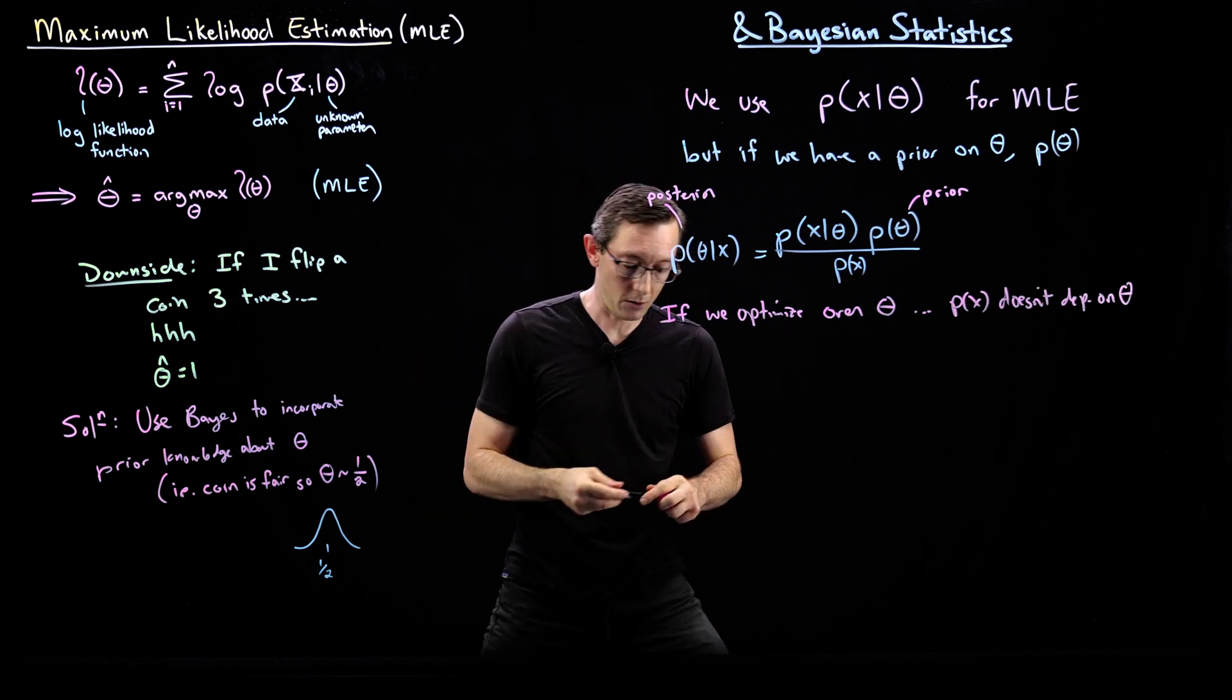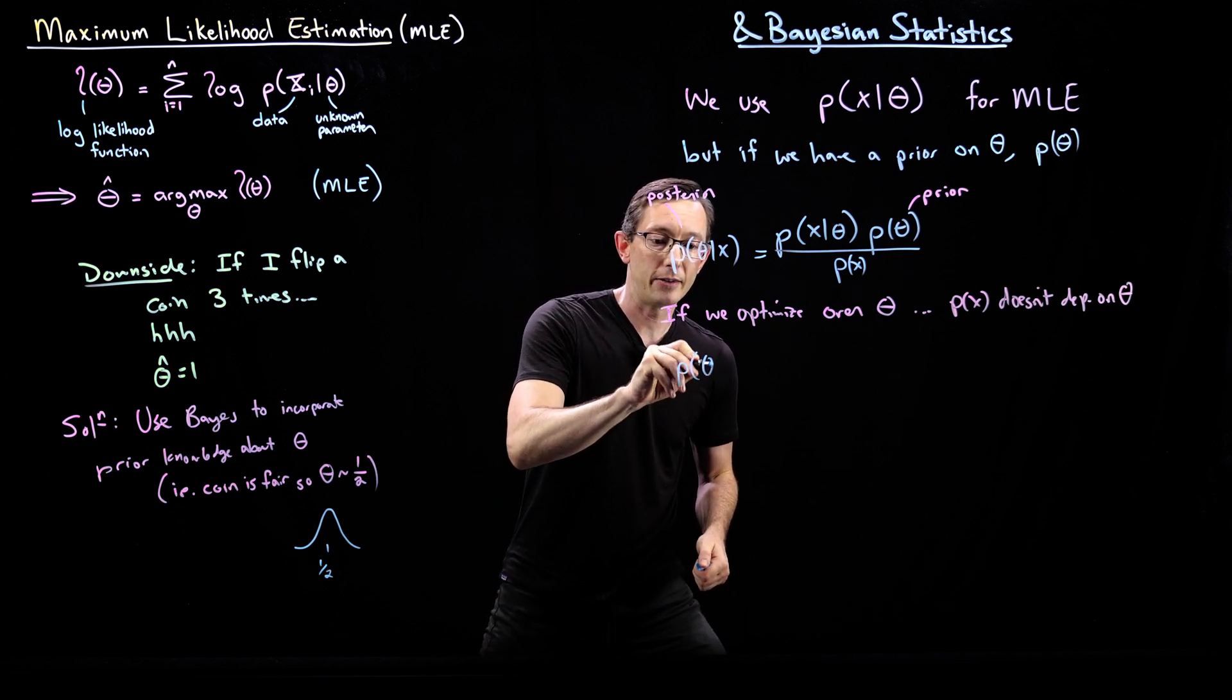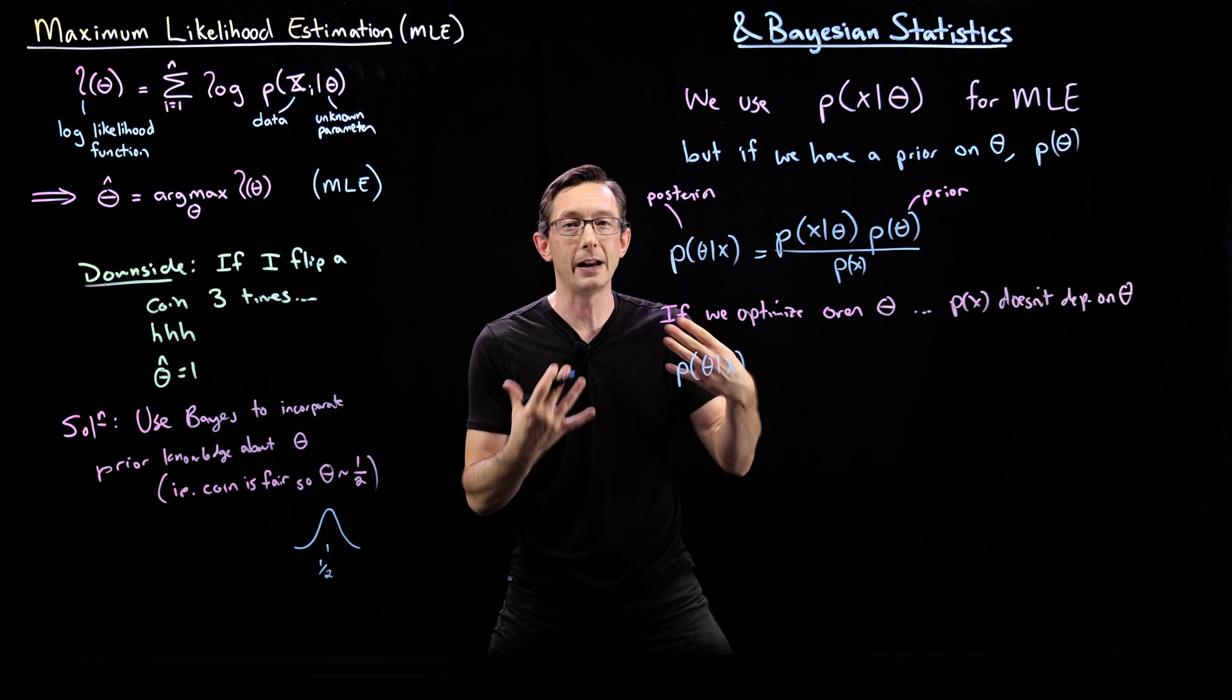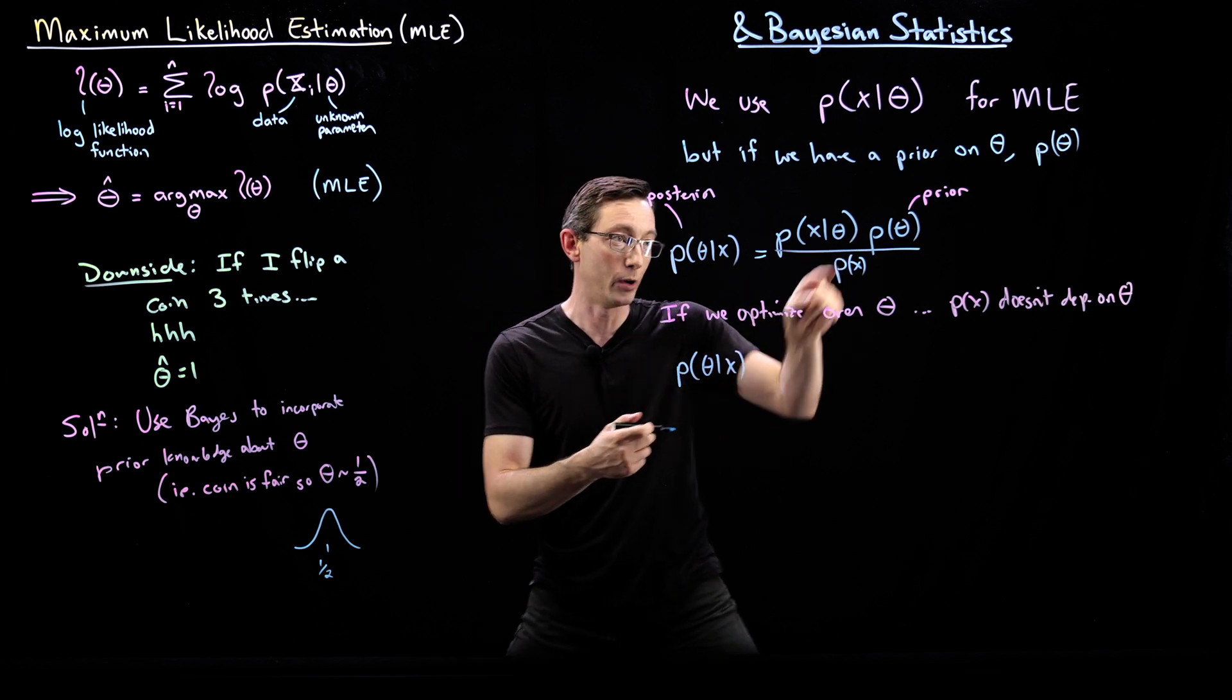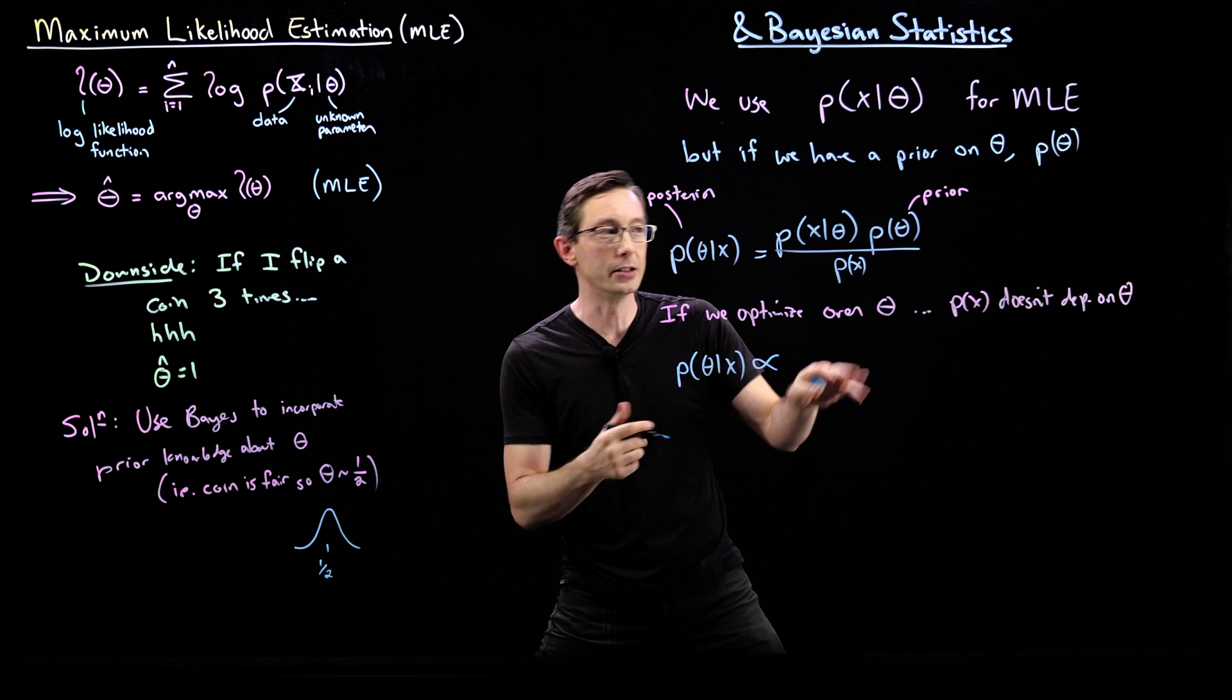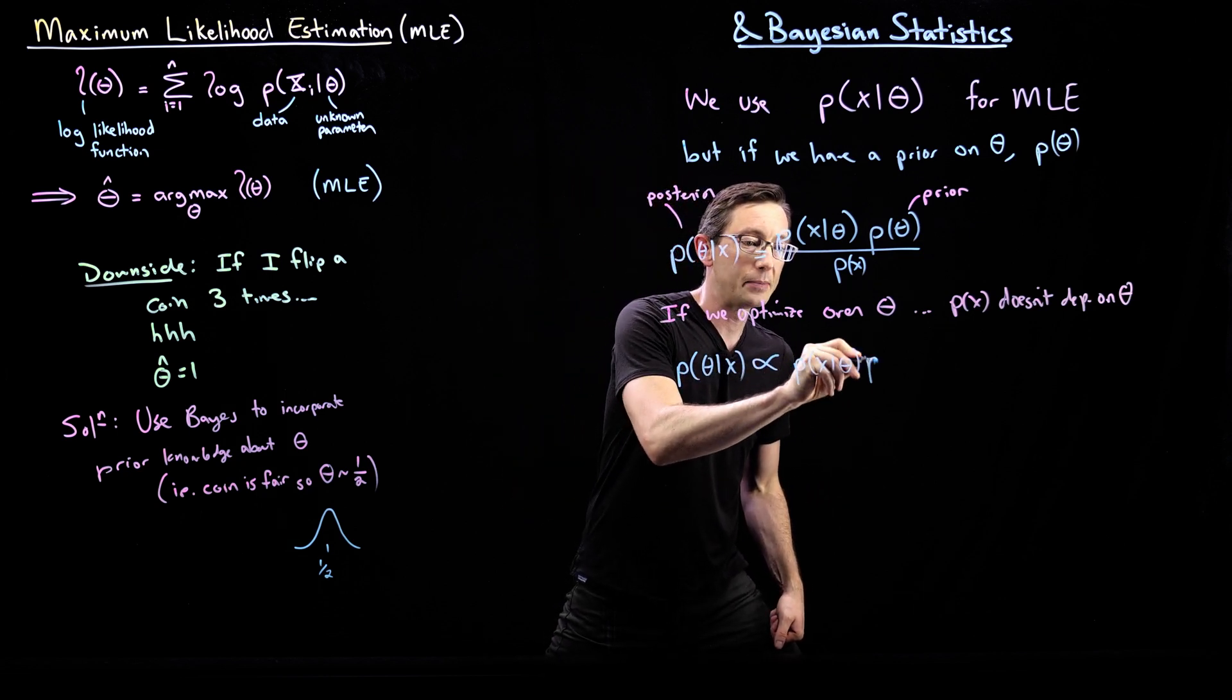So essentially what we can do, and this is a hand wavy argument, but you can make this precise, is that this quantity here, this posterior, P(θ|x), is kind of proportional. It varies in a similar way with theta. This means proportional to, kind of related to, P(x|θ) times P(θ).